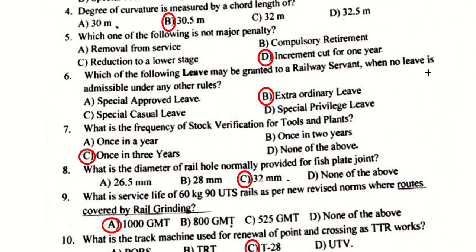Which one of the following is not a major penalty? The right option is D — increment cut for one year. The leave that may be granted to a railway servant when no leave is admissible under any other rules is option B — extraordinary leave.